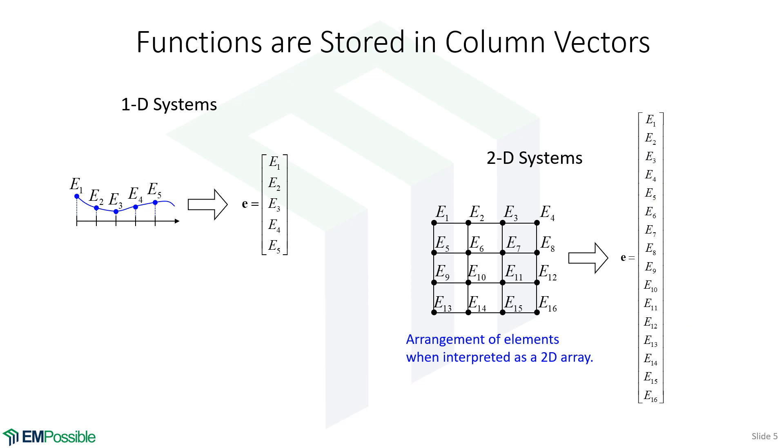Even in three dimensions, we can raster through. Usually we raster along X first, then Y, then Z. And we list everything in a single file line.